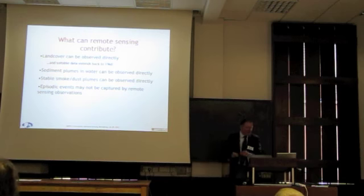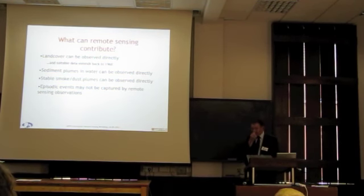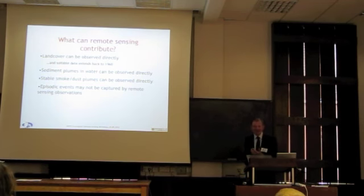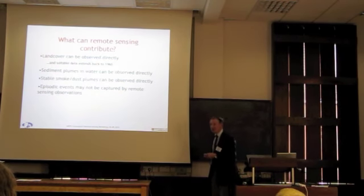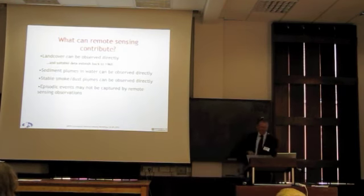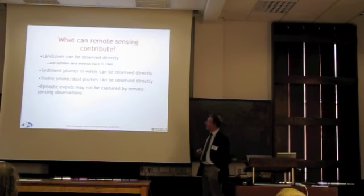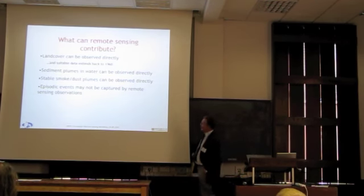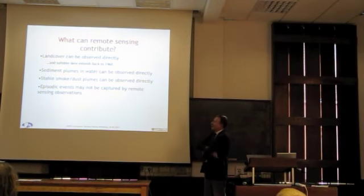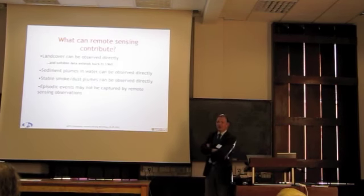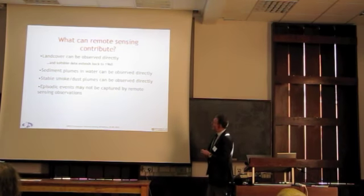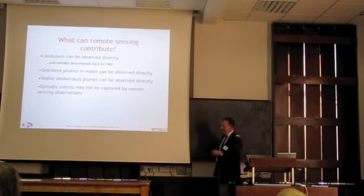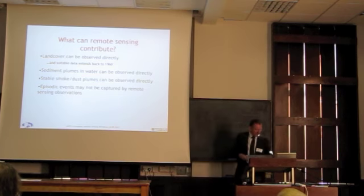So what can remote sensing do here? Land cover can be observed directly, and the satellite record actually goes back to about 1960. That's paradoxical — what's happened is that satellite imagery obtained for extremely secret purposes by organisations in the United States was declassified by President Clinton. This spy satellite imagery — Corona imagery — which goes back to about 1960, is now freely available at cost but publicly accessible. It's not easy to work with and not fully calibrated, but it's pretty useful.